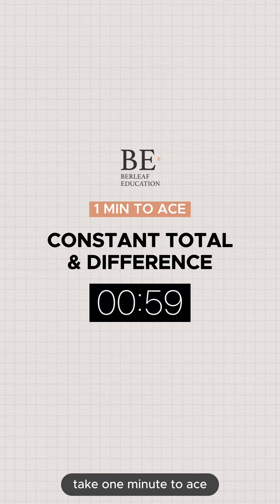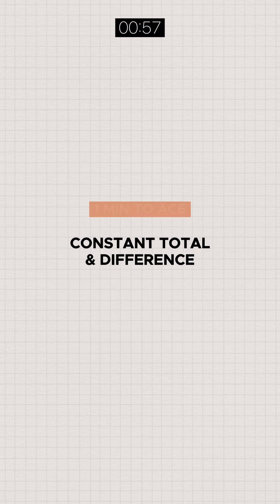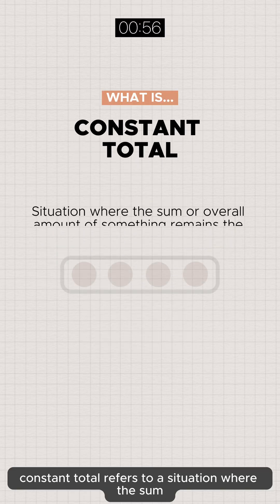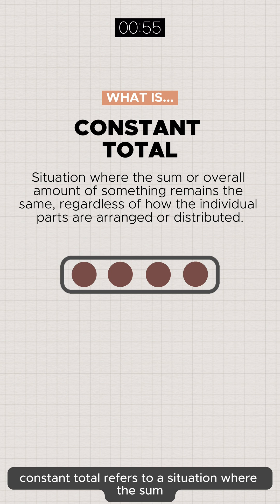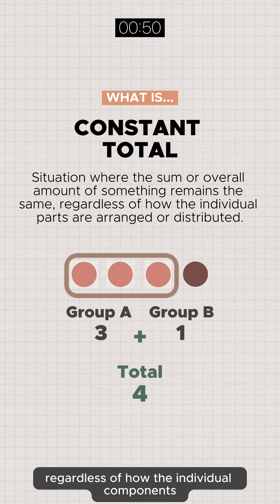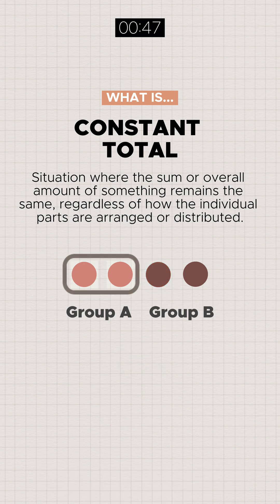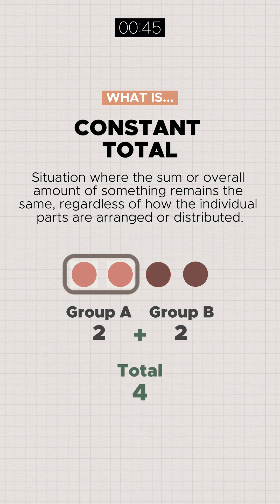Take one minute to ace constant total and difference. Constant total refers to a situation where the sum or overall amount of something remains the same regardless of how the individual components are arranged or distributed. Let's have some examples.